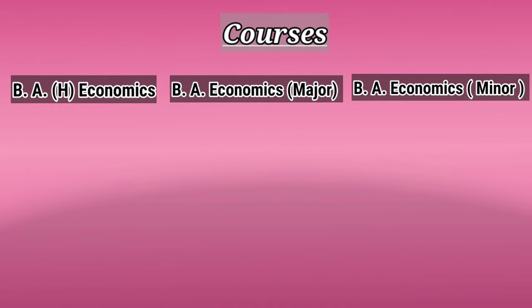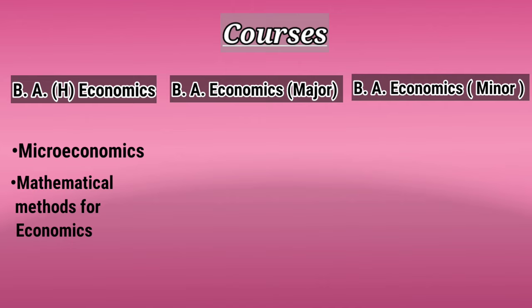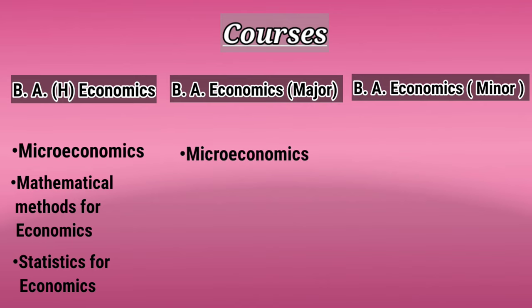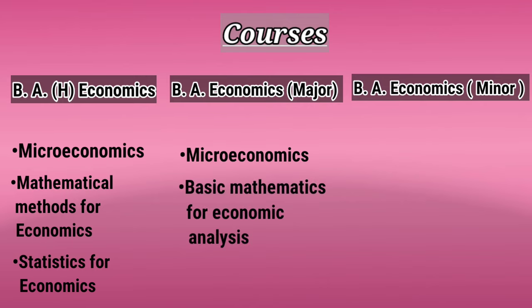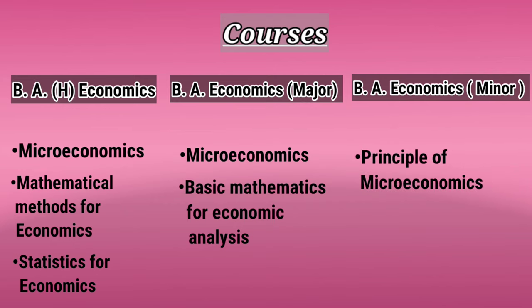For instance, in Economics Honours in the first semester you will be having three subjects: Microeconomics, Mathematical Methods for Economics, and Statistics for Economics. Whereas in Economics as a Major you'll be having only two subjects, that is Microeconomics and Basic Mathematics for Economic Analysis. And in BA Economics Minor there will be only one subject, that is Principles of Microeconomics. Obviously there will be other elective subjects as well, but these are the core subjects we are talking about.